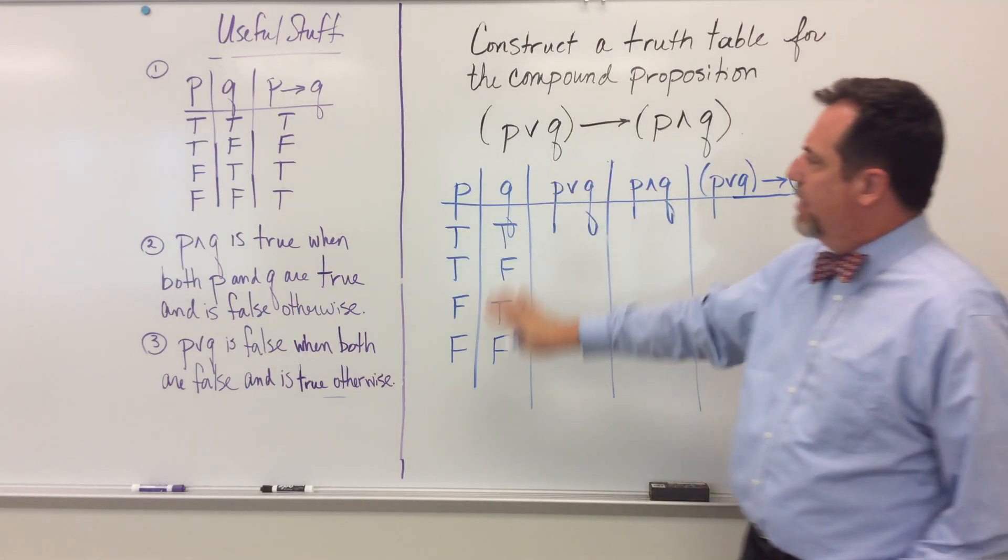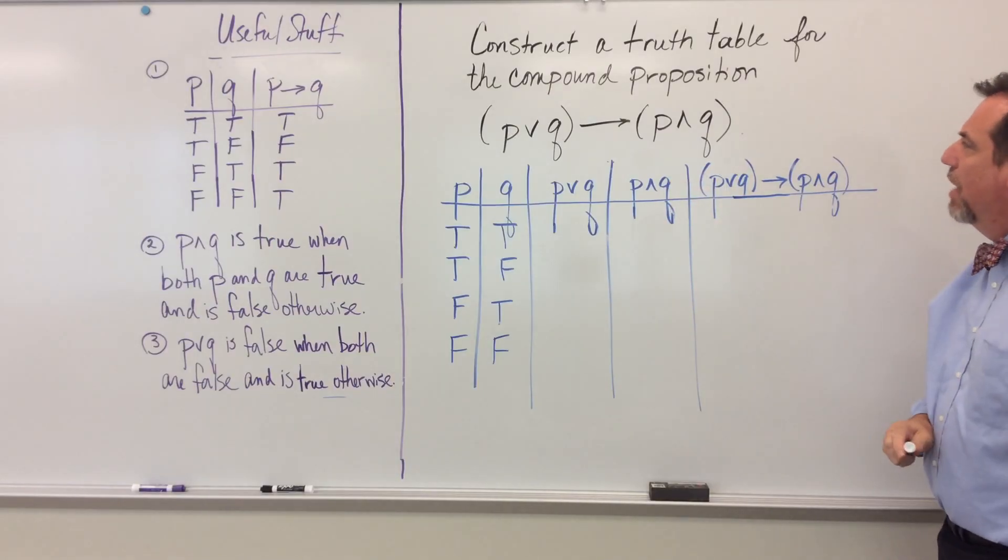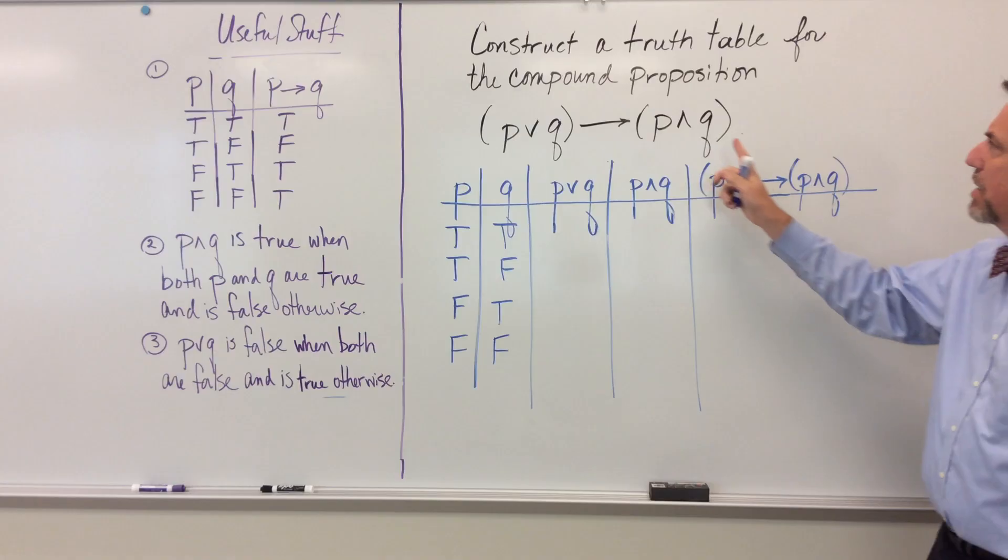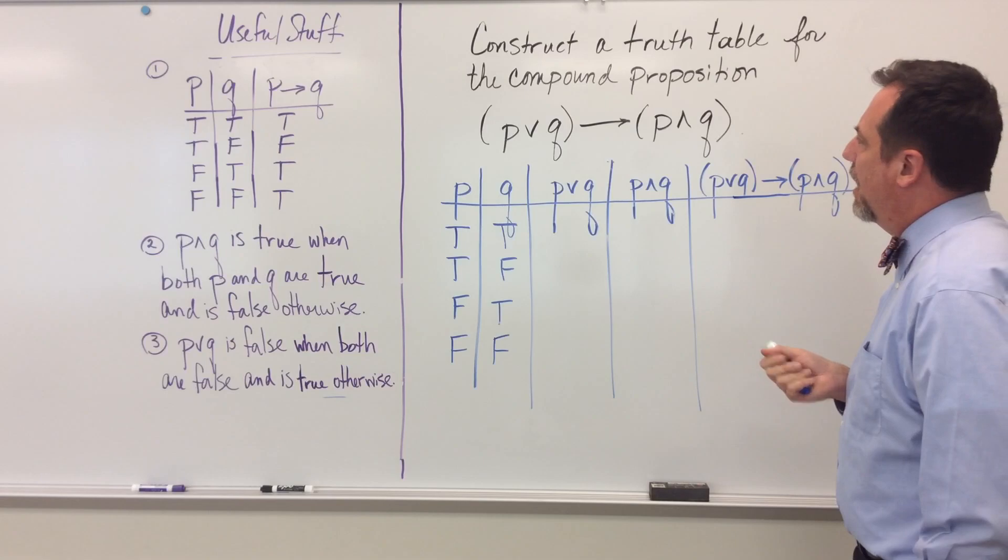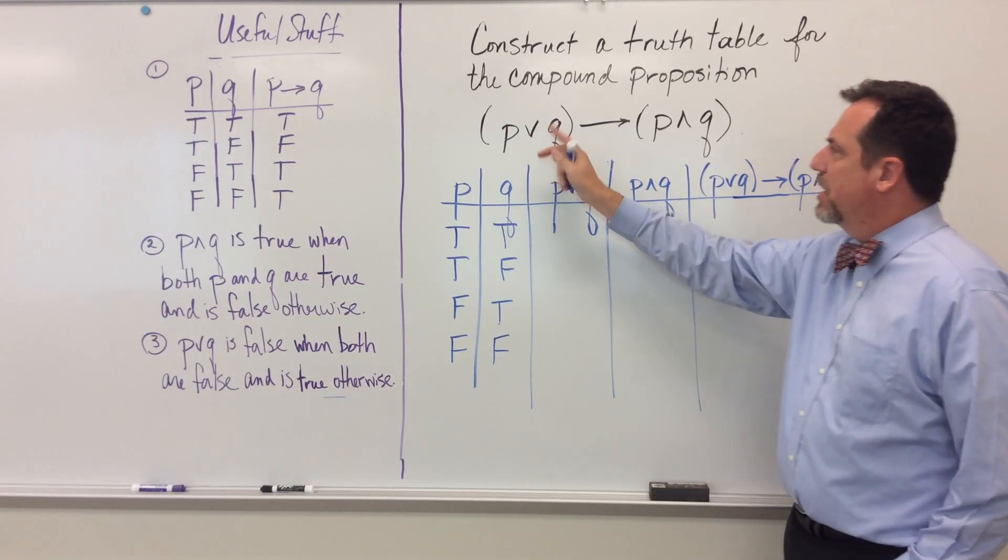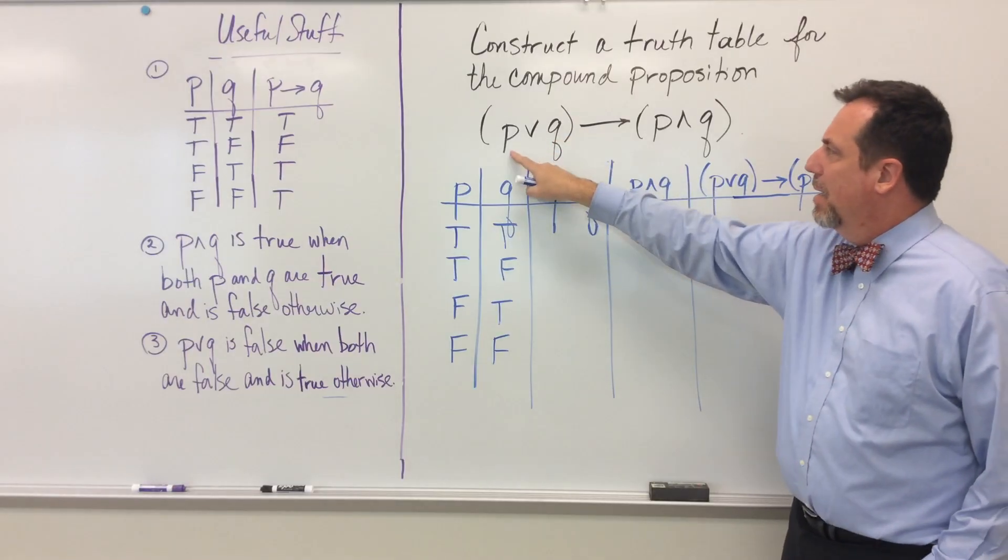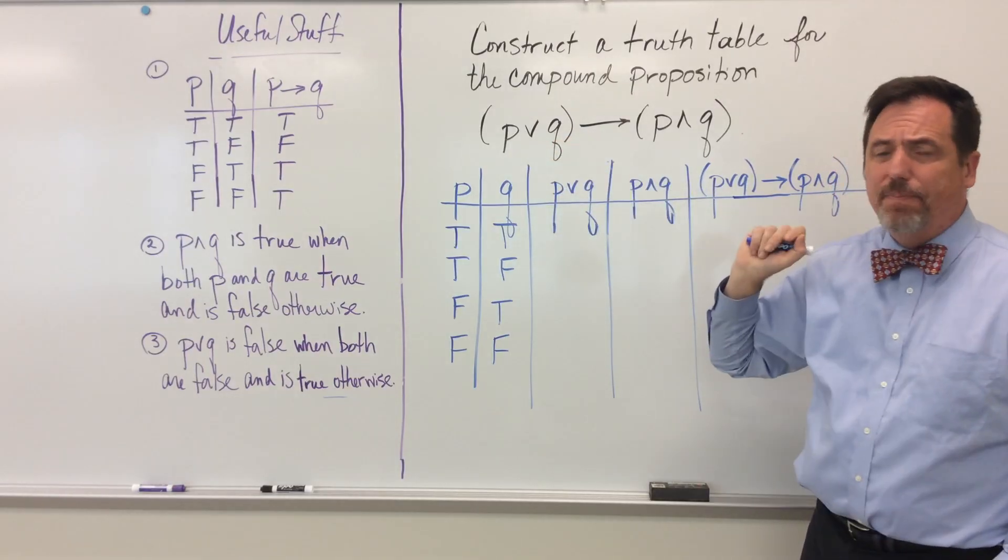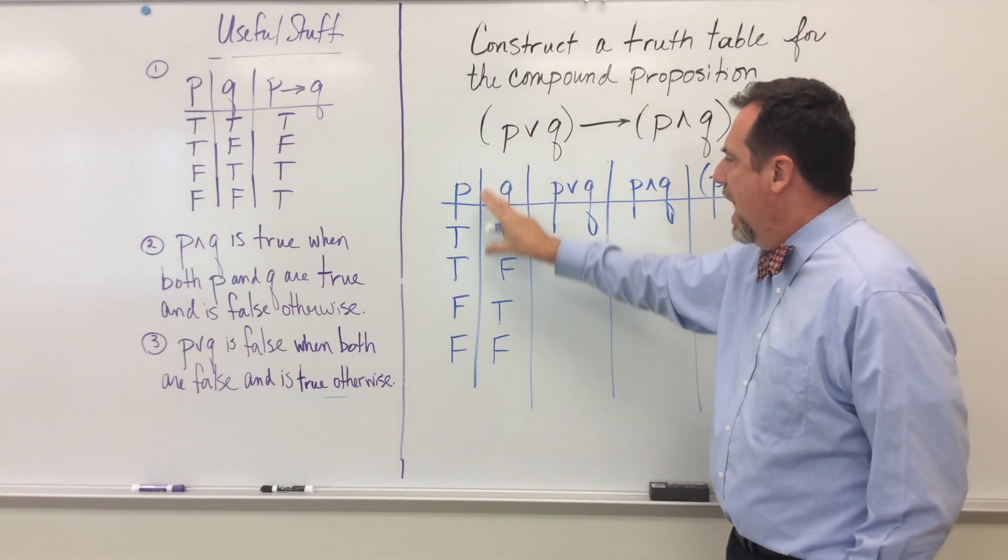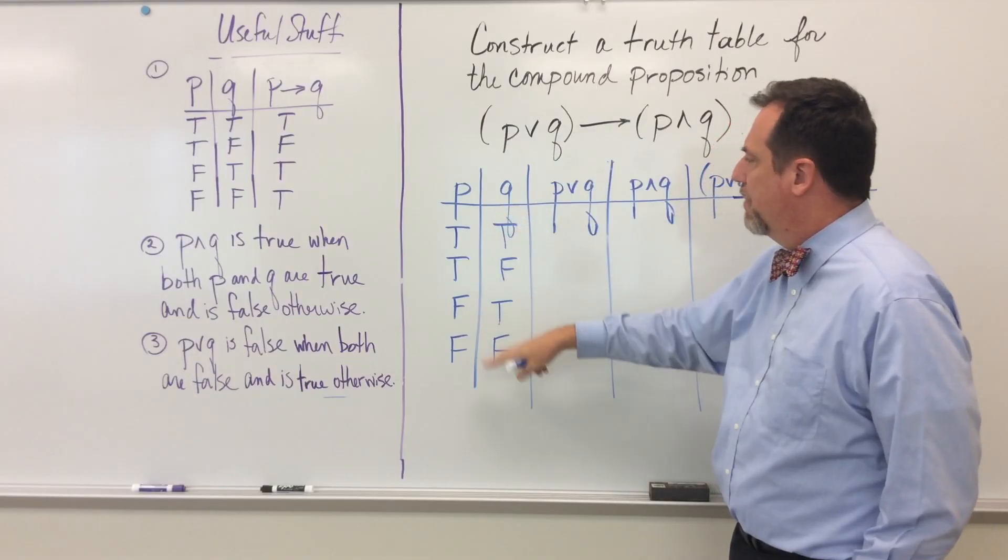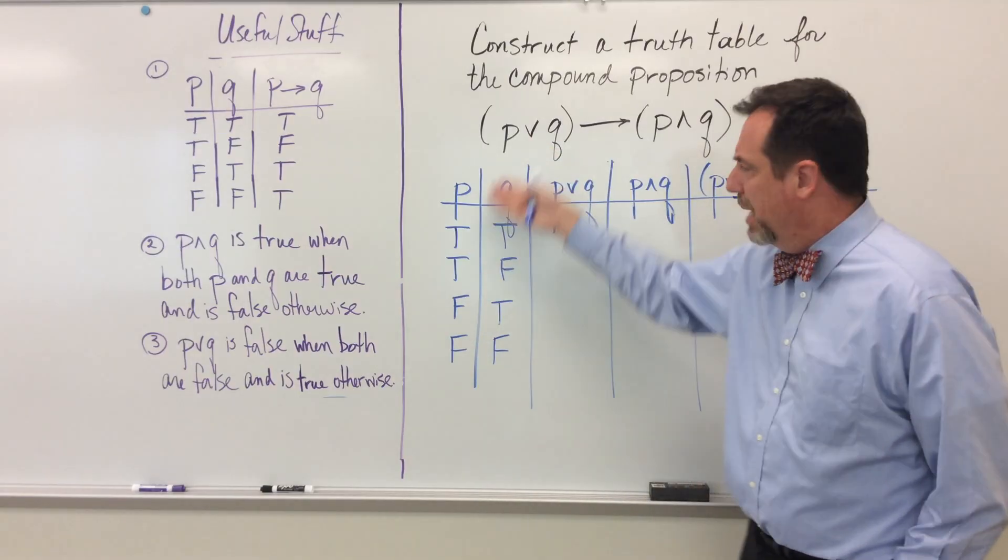And I've already sketched out what my truth table is going to look like and we'll just fill in the truth values of that truth table. So this conditional is a compound conditional and the component values, the atomic values that we have to worry about are contained in the propositions P and Q. So what I've done is I've written those as my column first, P and Q, and I've split up the truth values in such a way so that it's easy for me not to forget one. And this is kind of the way everybody does it.